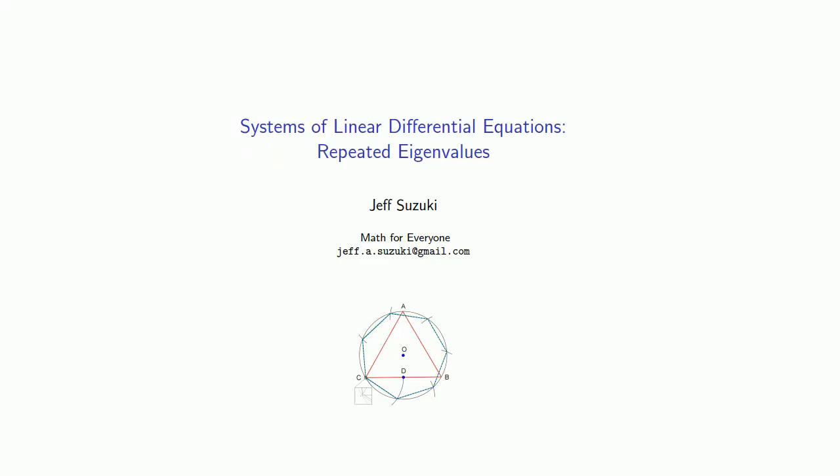So what happens in a system of linear differential equations when the eigenvalues are repeated? Suppose that in our linear system, dx equals ax, the coefficient matrix A has eigenvalue lambda with algebraic multiplicity greater than 1.